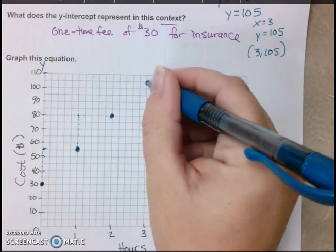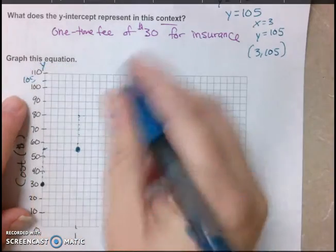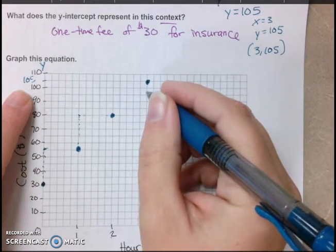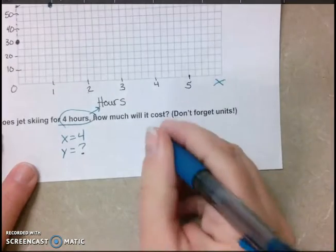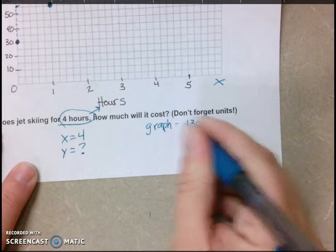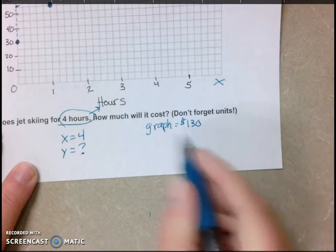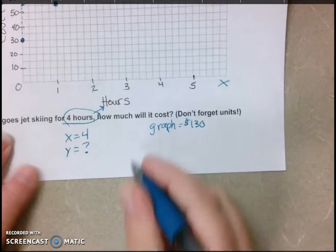So you can think we're at 105 here. And if you go up 25 from 105, that would be 130. So you get to 130. So using the graph, I was able to see that it would be at 130. Don't forget the units. We're talking about cost, $130.